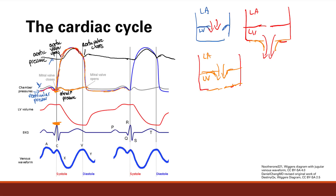The next thing is the venous waveform — this is the jugular venous pulse. This is basically looking at the venous pressure in the jugular veins, and it reflects pressure in the right atrium because the jugular veins drain into the right atrium.